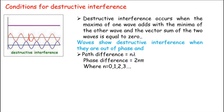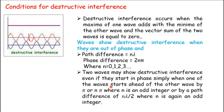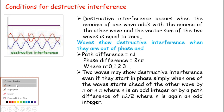When two waves have certain path differences and phase differences, we get destructive interference. A question arises: can two waves that start in phase show destructive interference? Yes, they may — two waves can show destructive interference even if they start in phase, as long as one wave starts ahead of the other by n·pi (where n is an odd integer) or by a path difference of n·lambda/2.